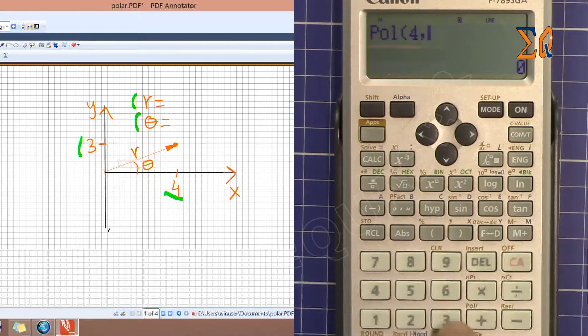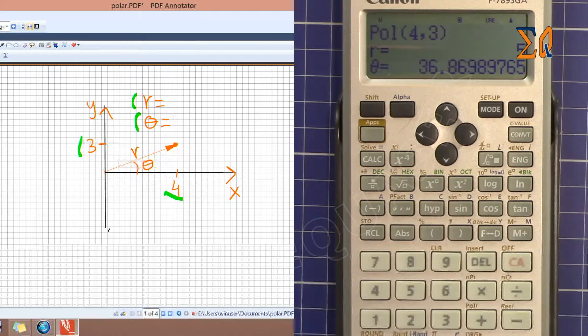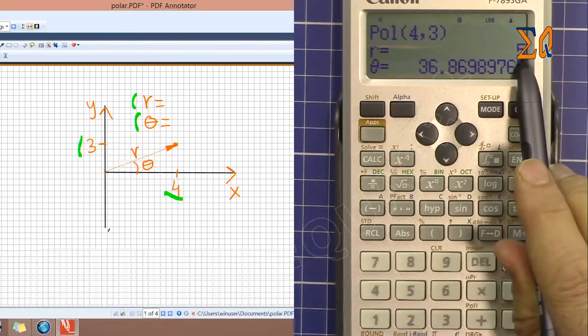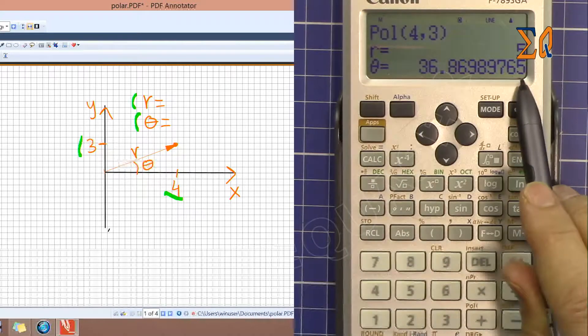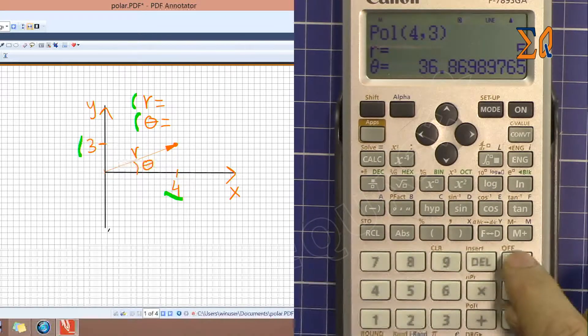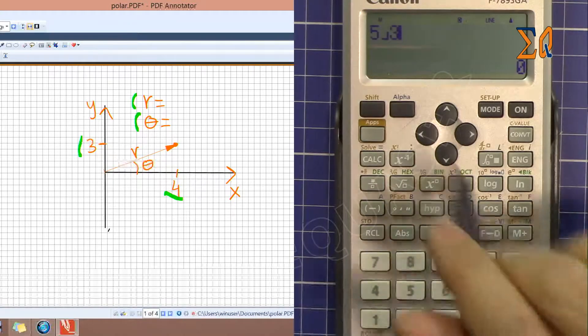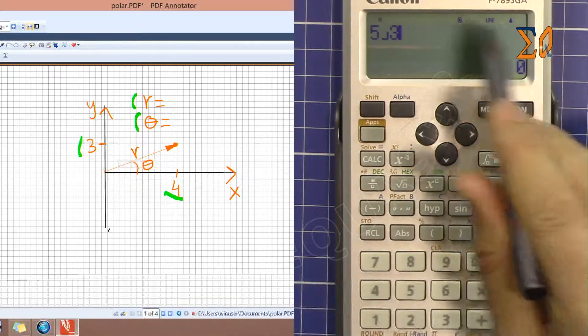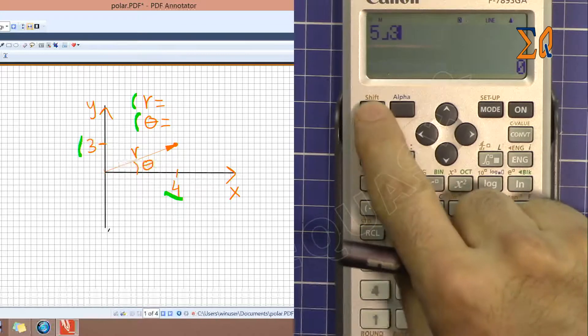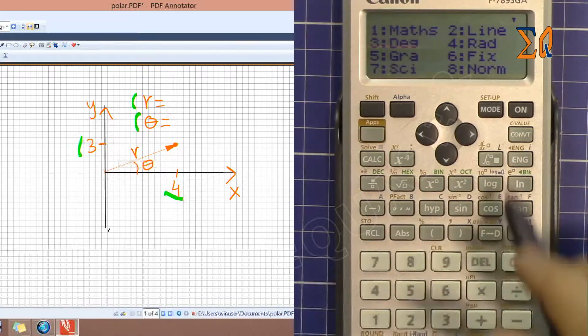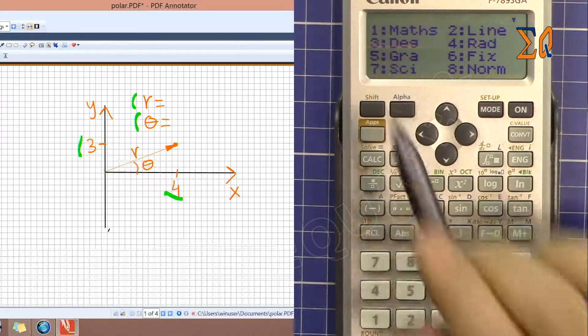Now let's do it. Shift pull 4 and then shift comma 3, close it. Now you'll see that it shows us R and theta separately, but the problem is that you cannot do a regular fraction. If you do that you will see the fraction like this. To come back to the normal mode, just shift, go to setup, and select math number 1.